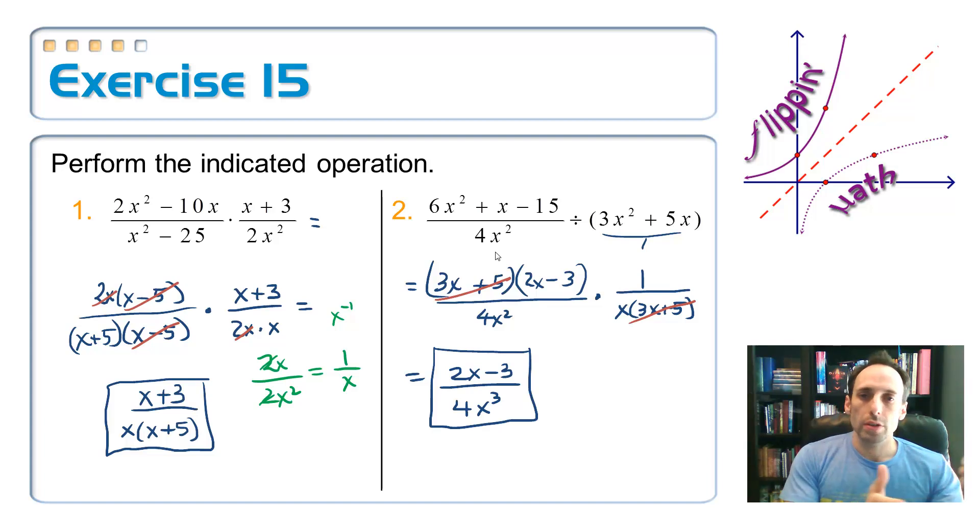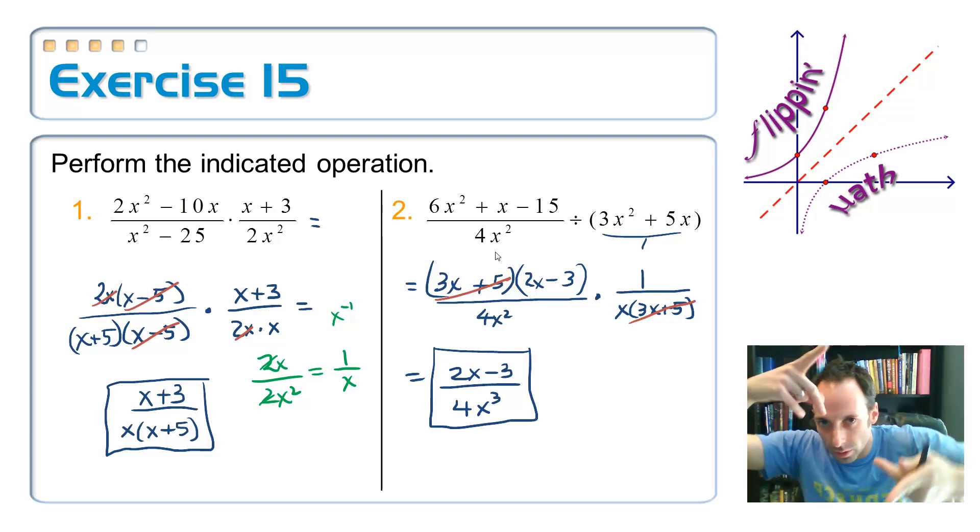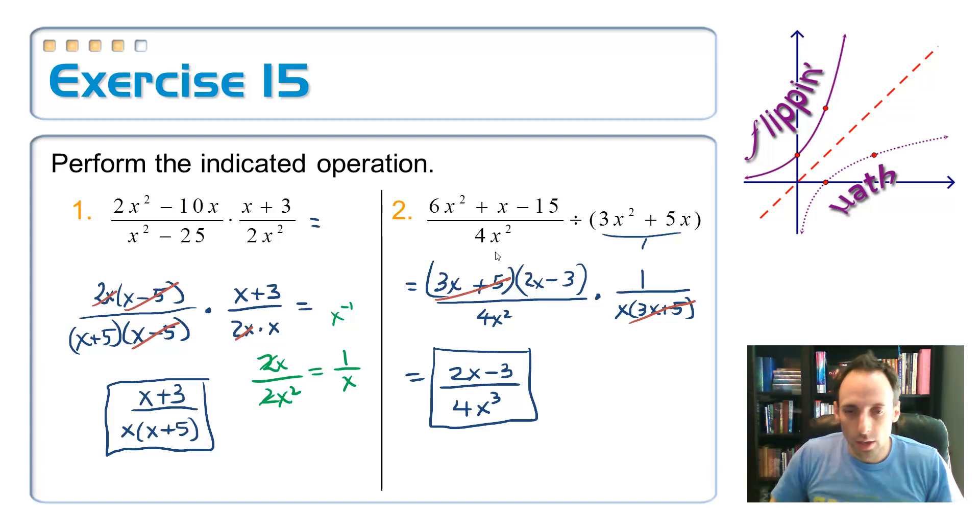Multiplying two rational expressions, you multiply straight across. Top, top, top. Bottom, top, bottom, bottom. You want to factor first so you can cancel out anything that they might have in common across the top and the bottom. Dividing, you multiply, but after you flip the second one, just like that. Then you multiply straight across.